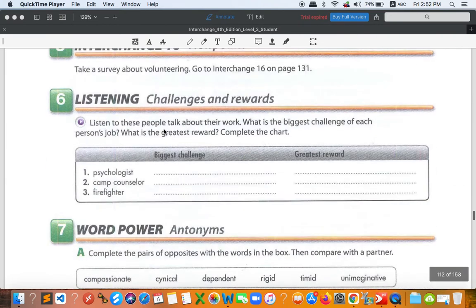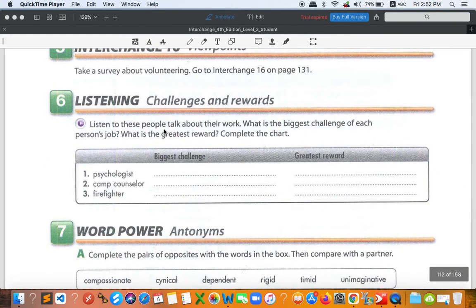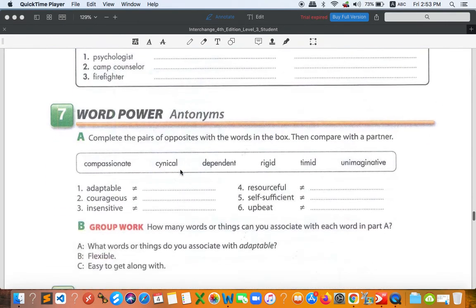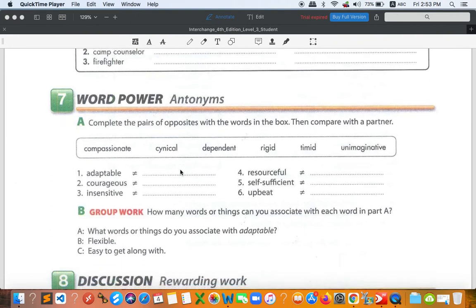Now let's go to the next activity. Number six is about listening challenges and rewards, so you can listen to the audio and get the answers later. Now let's go to number seven, Word Power Antonyms, which is the opposite. Before we can find the opposite words, we need to understand all those words.